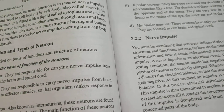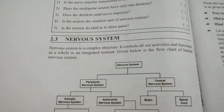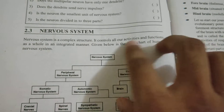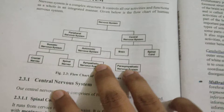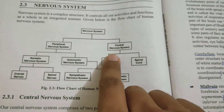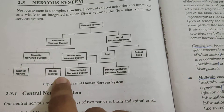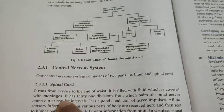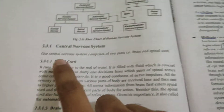This is how neurons and brain work together to decipher the electrical impulse and to decide what action to take. Moving on to the nervous system — the nervous system is a complex structure that controls all our activities and functions in an integrated manner. It is divided into the peripheral and central nervous system. Peripheral is further divided into somatic and autonomic nervous system, and somatic into cranial and spinal nerves. The two most important parts of the nervous system are the brain and the spinal cord.